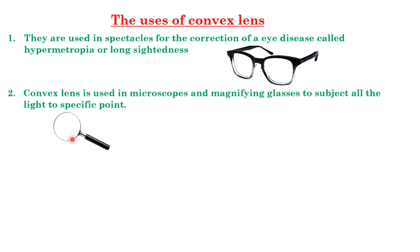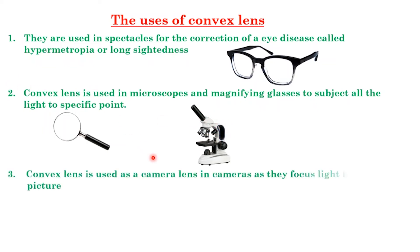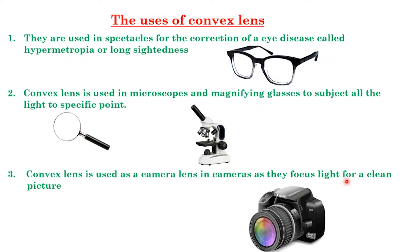Magnifying glass works because in a convex lens, when an object is placed between f and O, its image is enlarged and erected. Convex lenses are also used in telescopes — with multiple lenses — which help enlarge very tiny or distant objects. Additionally, convex lenses are used in cameras to focus light for a clear picture.